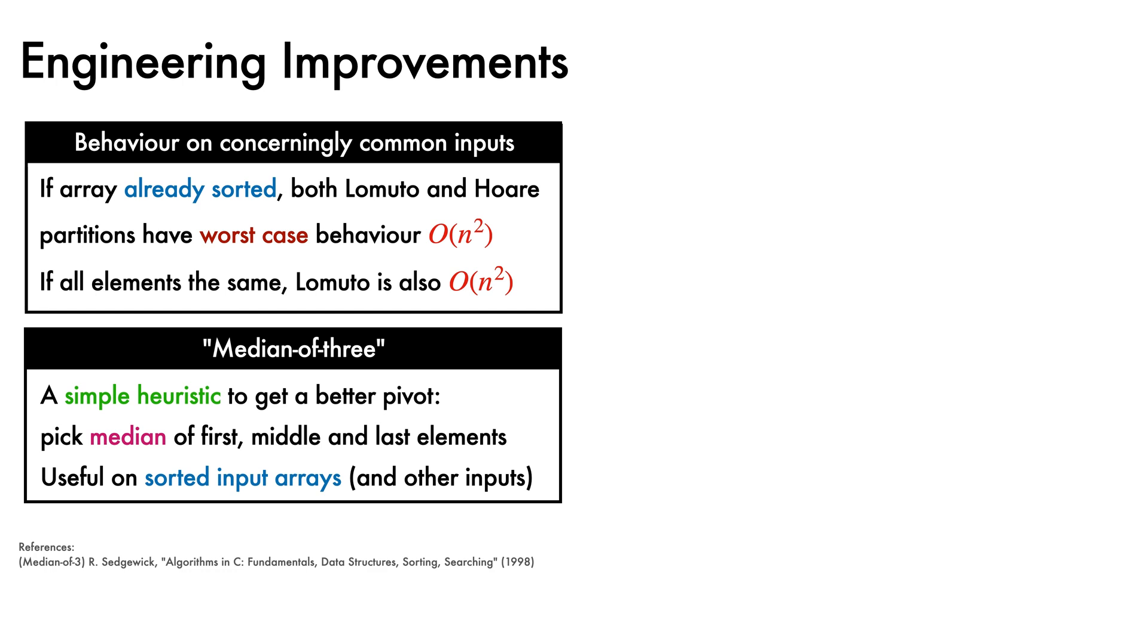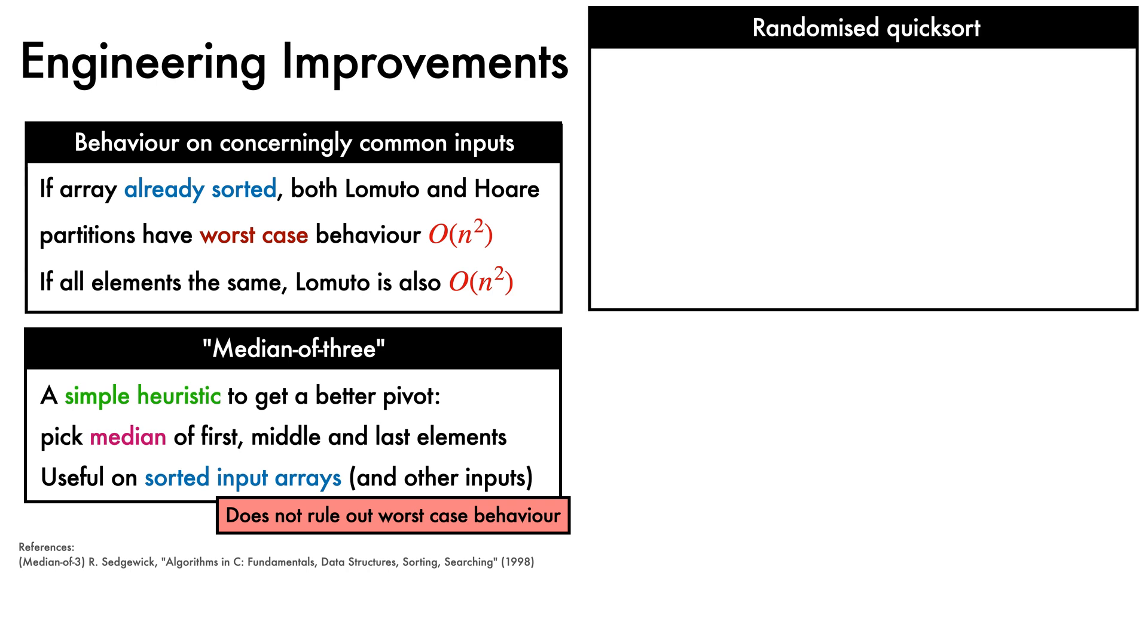However, it has its limits, and doesn't rule out worst case behaviour in general. We'll briefly also discuss randomised quicksort, a variation of the algorithm we've discussed so far that is very close to Hoare's original proposal, which also used randomisation.